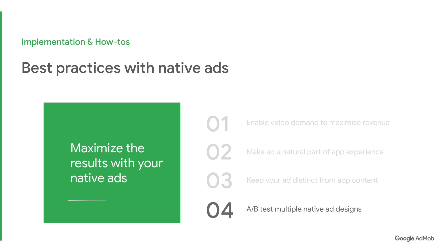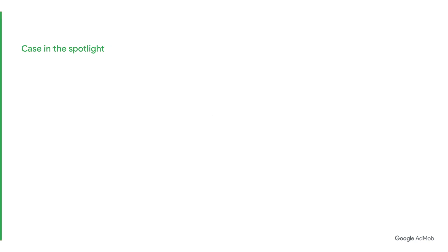Our final best practice is to test multiple native designs and implement the best ones. After all, different designs perform better in different apps, app categories, or regions. Try Firebase A-B testing to test different ad designs. Now let's take a look at a developer who has found success with native ads using Firebase A-B testing.